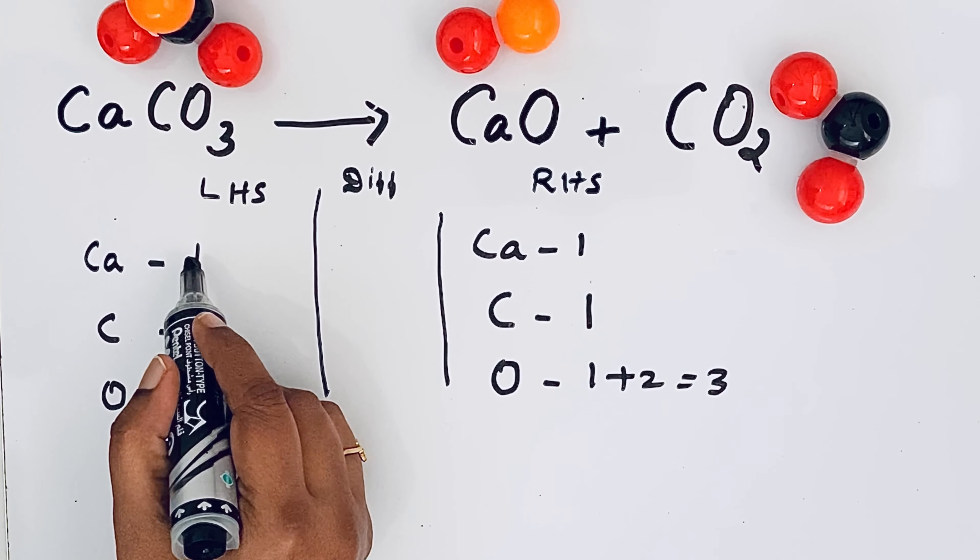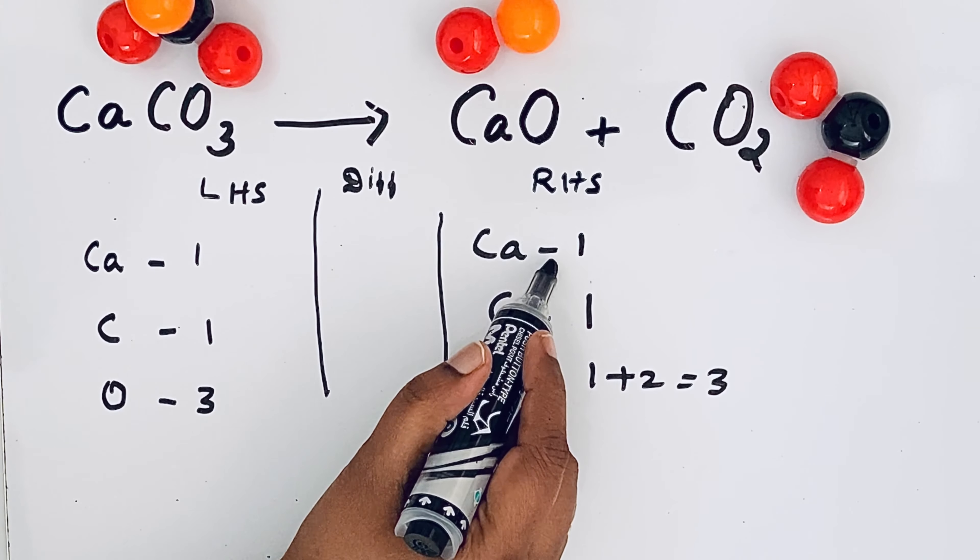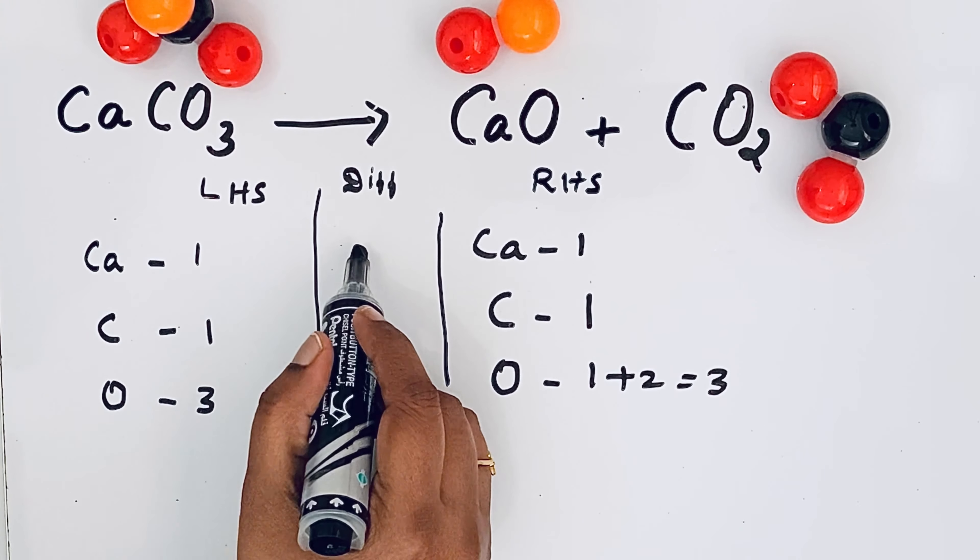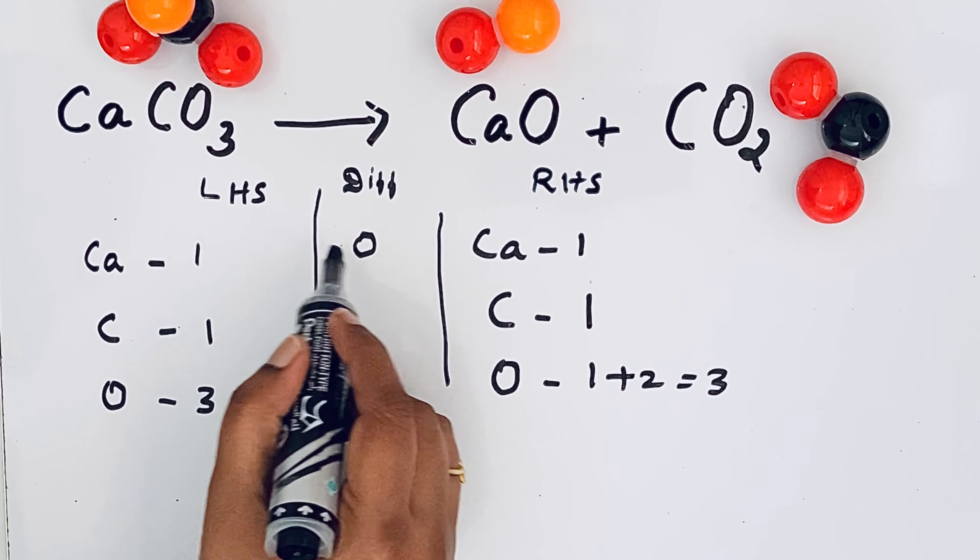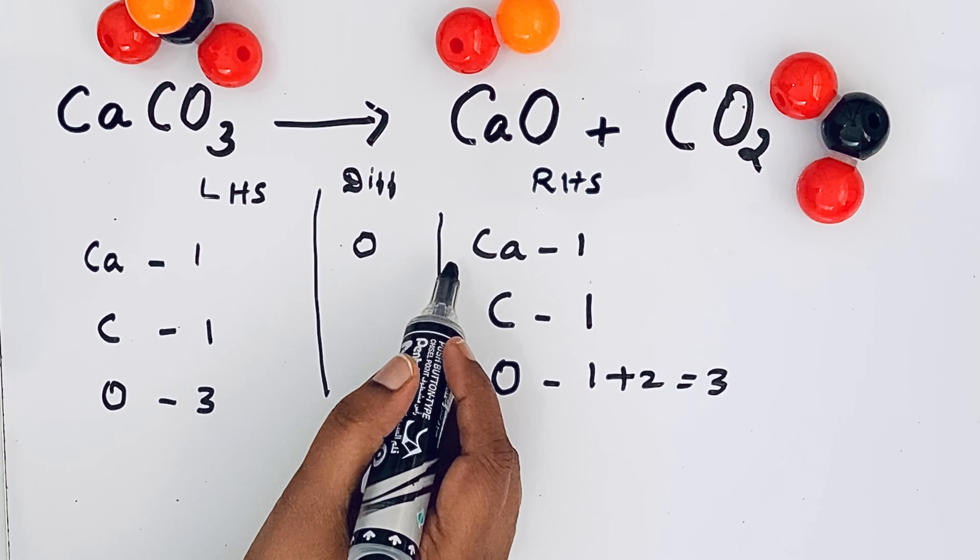For example for calcium in the left side we have one and right hand side also we have one. So one minus one is zero. In the difference column if we get zero it means that the atoms are balanced.